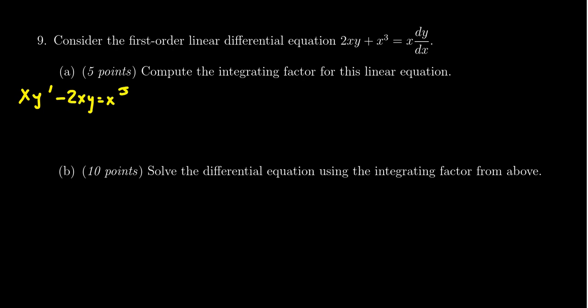I want the coefficient of y prime to just be one, so I'm going to divide both sides by x. We get y prime minus 2y is equal to x squared. This gives us the standard form for a first order linear differential equation.